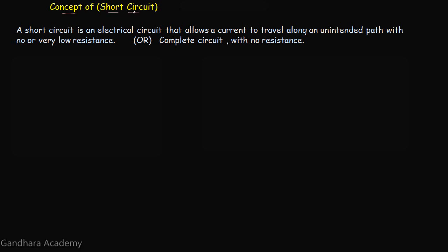What is a short circuit? A short circuit is an electrical circuit that allows a current to travel along an unintended path with no or very low resistance, or simply a complete circuit with no resistance. By an unintended path we mean the path which is undesirable or the abnormal path between two nodes for the current to follow.